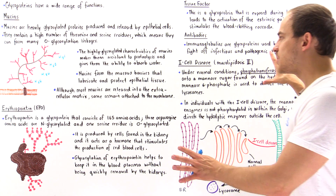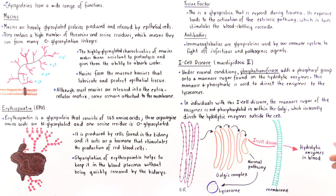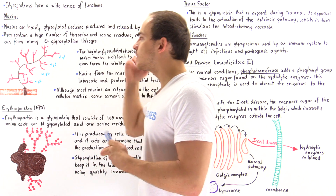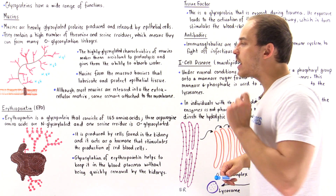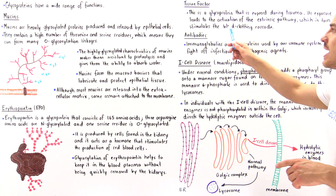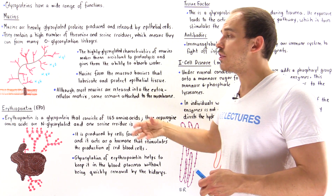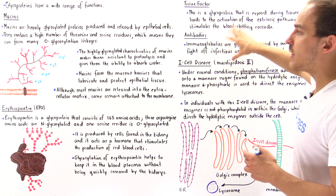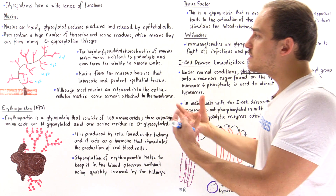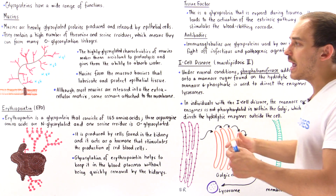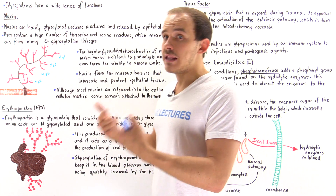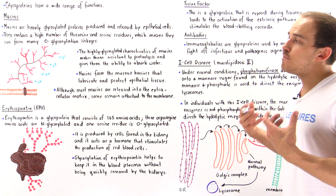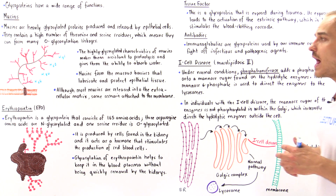We see that glycoproteins have a wide range of functionality. Some glycoproteins absorb water and act as lubricants while also protecting our body from infectious agents. Others play a role in the blood clotting cascade, initiating the coagulation process. Others act as hormones, and we have many more examples besides.